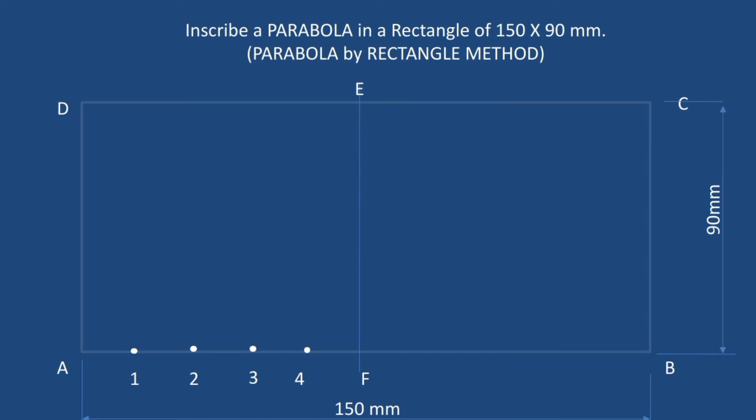Draw vertical lines at these points which are perpendicular to the line AF. Draw the equal number of points on AD line. Join the line from E to 1 dash.